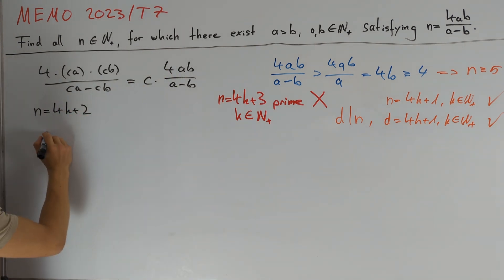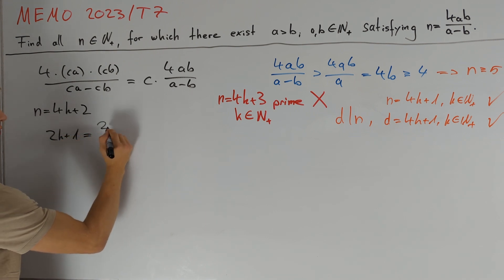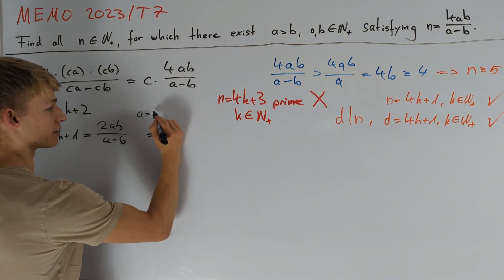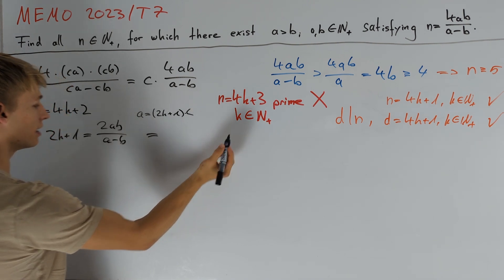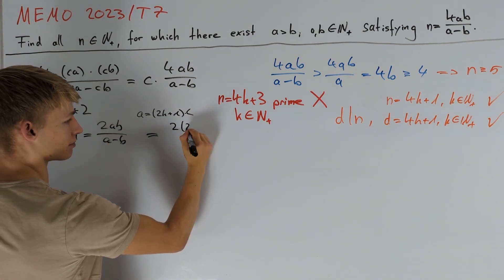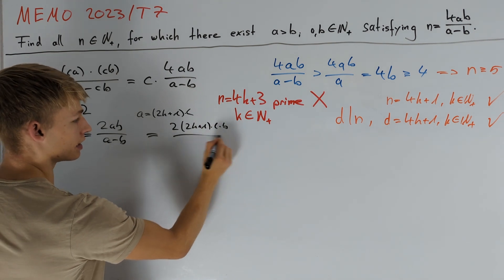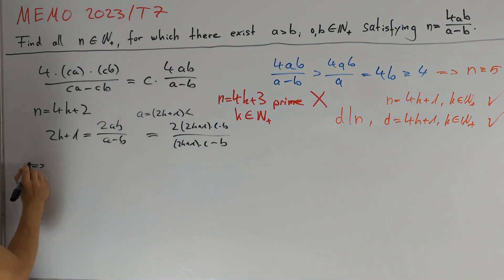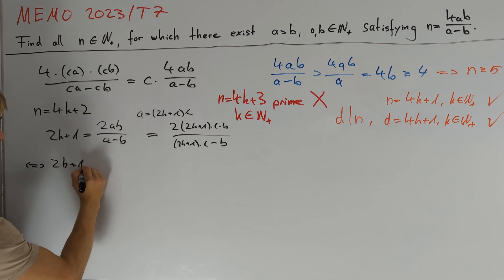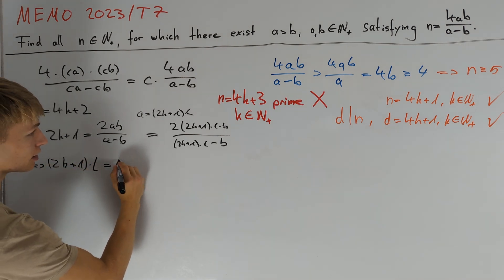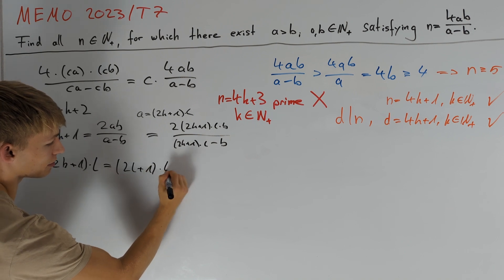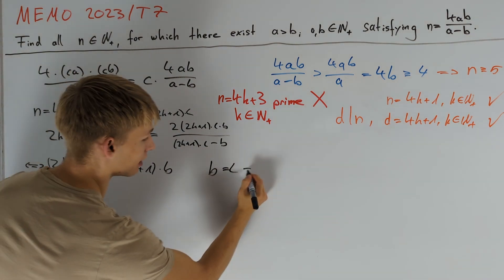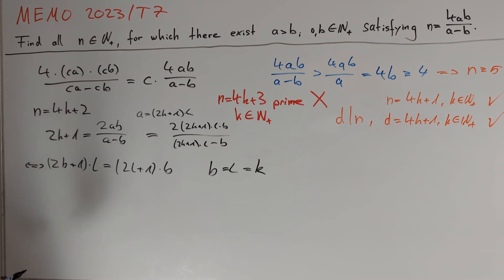For n equals 4k plus 2, the equation becomes 2k plus 1 equals 2ab divided by a minus b. We write a equals (2k plus 1) times l, and rearranging as before gives (2k plus 1) times l equals (2l plus 1) times b. Taking b equal to l and l equal to k indeed satisfies this equation, so this case works.